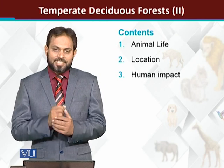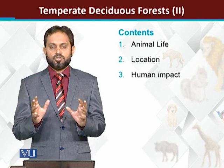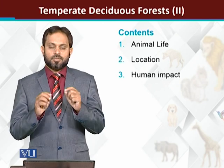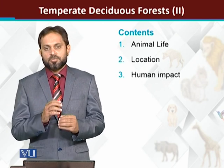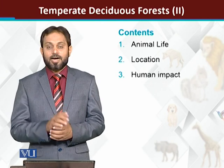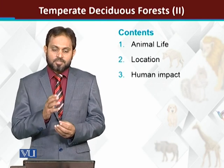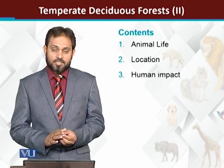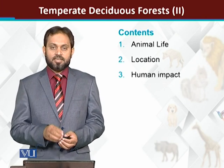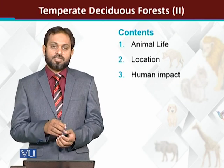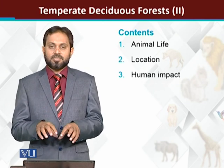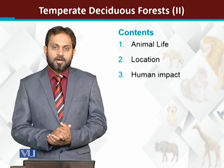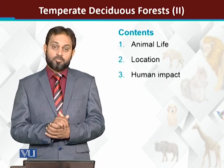Looking at the decomposition process, deciduous forests have a speedy soil decomposition process. Soil-inhabiting organisms include different types of worms, arthropods of different types, and other species — they are enriched there, meaning there is a maximum number of organisms present.